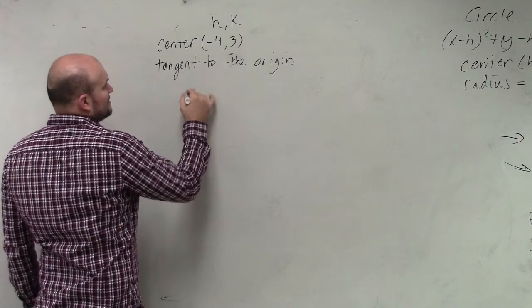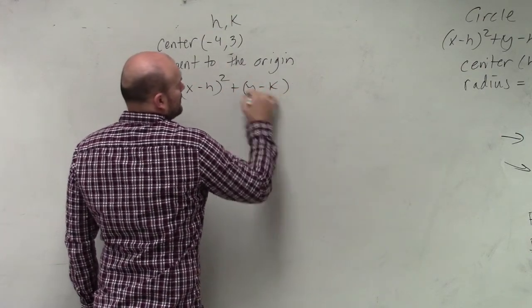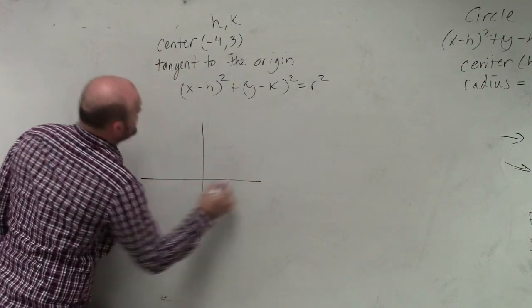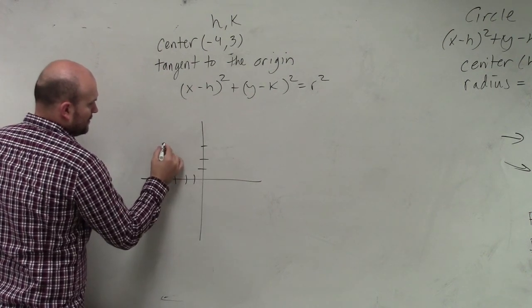So let's go ahead and let's see. We have x minus h squared plus y minus k squared equals r squared. All right, so graph the information, negative 4, 1, 2, 3, 4, 1, 2, 3. There's the center.